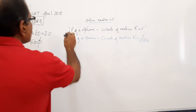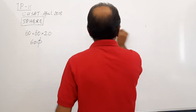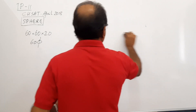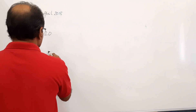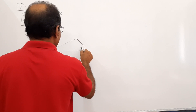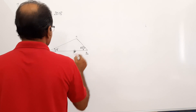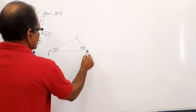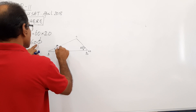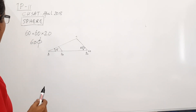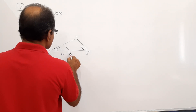Coming to our problem: a ball of 60 mm diameter is sitting on top of a square slab. We are going to draw the isoview. The dimensions involved are: 60 for the ball diameter, 20 for the slab height, and 30 — we will later discuss why 30 is required.